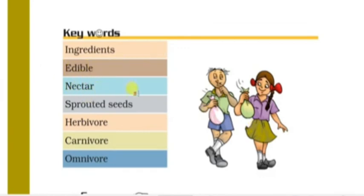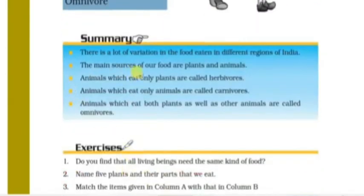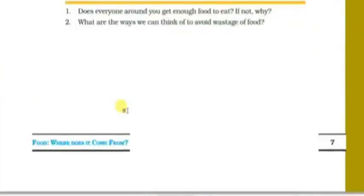Keywords: Ingredients means the components from which a food item is made. Edible means fit to be eaten. Nectar is a sweet juice found in flowers that bees collect. Sprouted seeds are seeds like moong or chana that have been soaked in water and develop a small white shoot. Herbivores are animals that eat only plants.